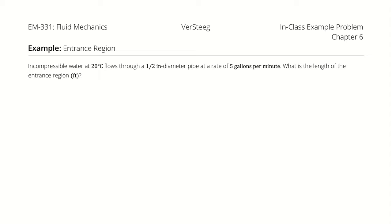Incompressible water at 20 degrees Celsius flows through a 1.5 inch diameter pipe at a rate of 5 gallons per minute. What is the length of the entrance region in feet?